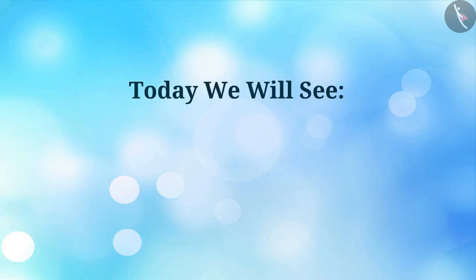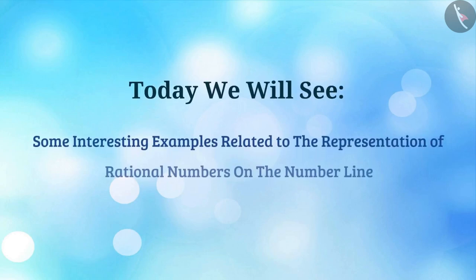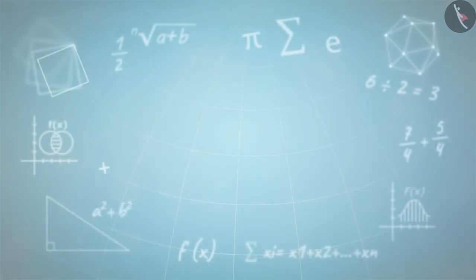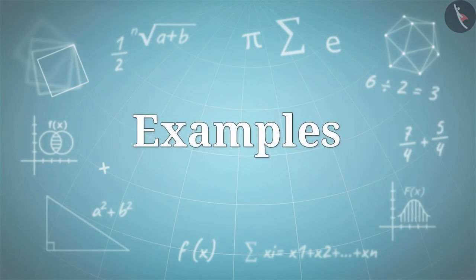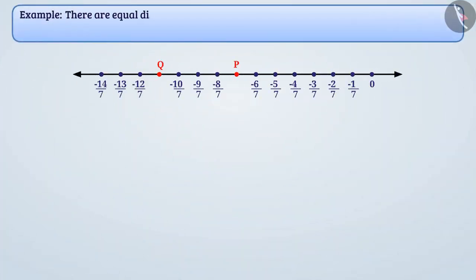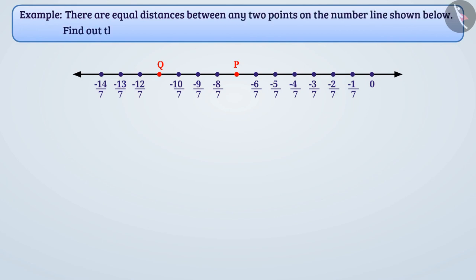Today, we will see some interesting examples related to representation of rational numbers on the number line. There are equal distances between any two points on the number line shown below. Find out the rational numbers denoted by points P and Q.